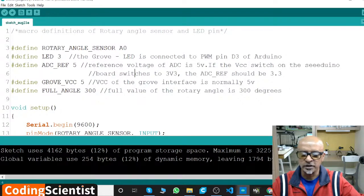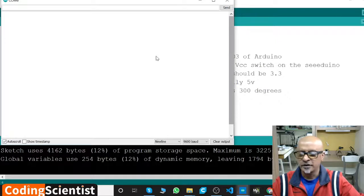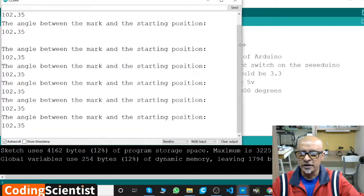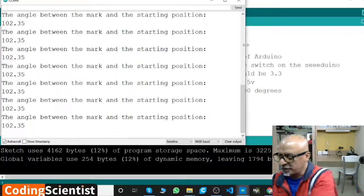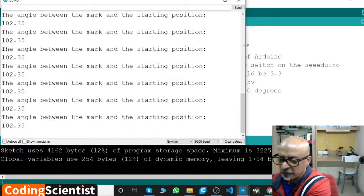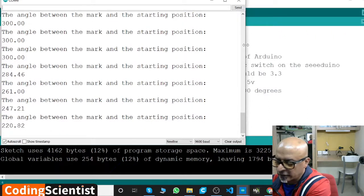Once you click upload, check the terminal monitor. You can see here, let me just close this and open it again. There you go - the angle between the mark and the starting position. Let me change the angle here of my rotary angular switch. There you go, it's changing the angle 278 to 90, 300, it's up to 300.